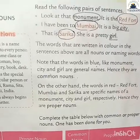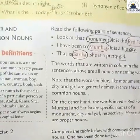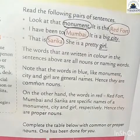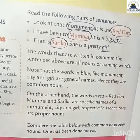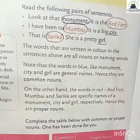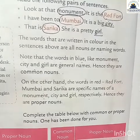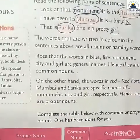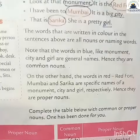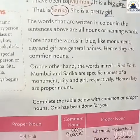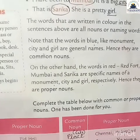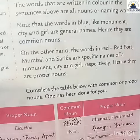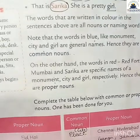For common noun 'river', the proper nouns are Ganga and Yamuna. For proper nouns Char Minar and Eiffel Tower, the common noun is 'monument'. For common noun 'religion', the proper nouns are Hindu, Sikh, and Muslim. For proper nouns Himalaya and Alps, the common noun is 'mountain'.